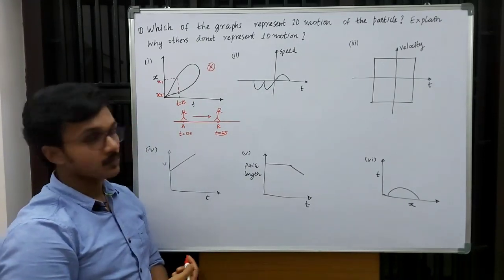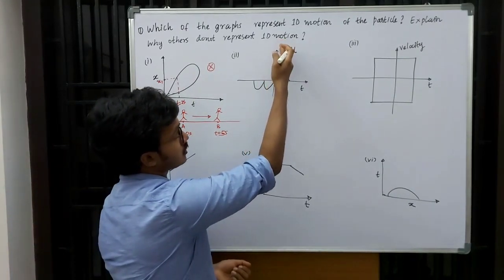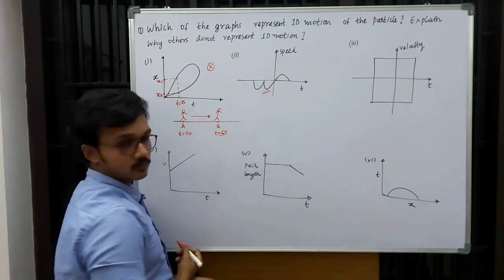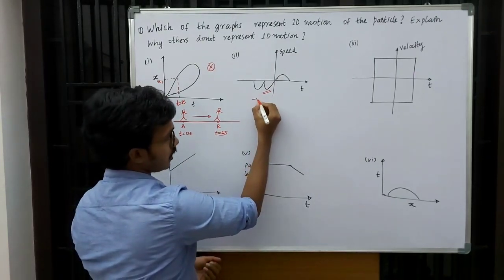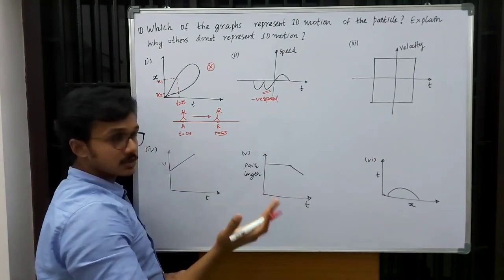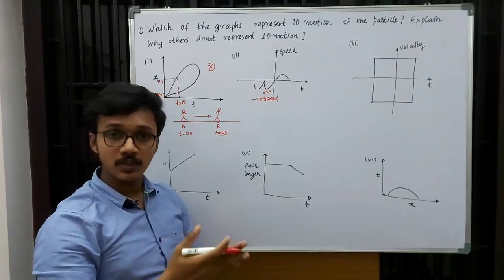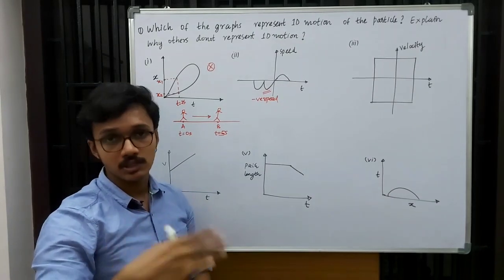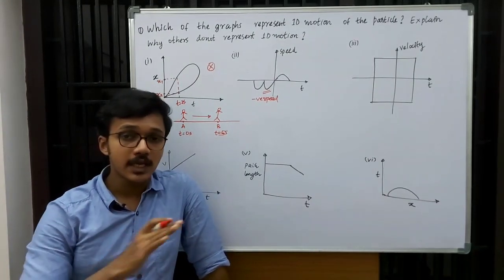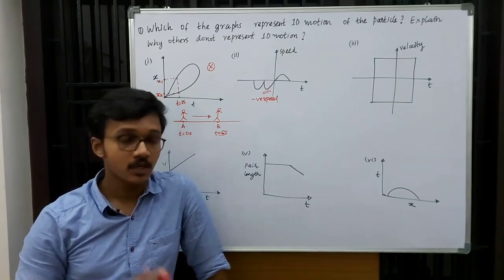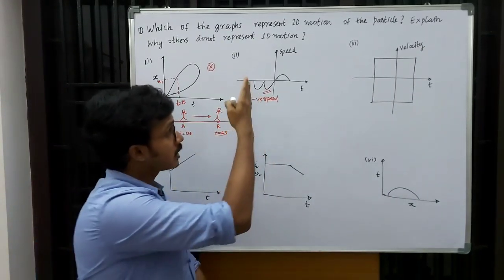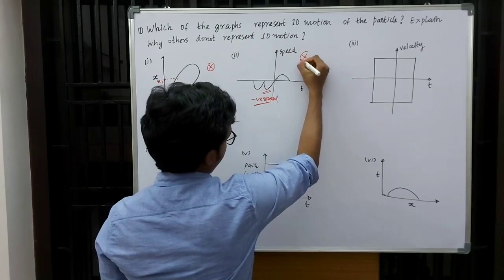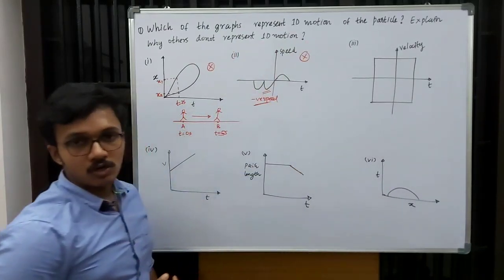Now let us see the second graph. Here we have speed along the y-axis and time along the x-axis. But what is happening here? It is showing negative speed. But can speed be negative? No, speed can never be negative. Because speed equals distance by time, or total path length by time. Distance or path length can never become negative. So speed can also never become negative, but the graph is showing negative speed, which is not possible. So this graph is also not possible.